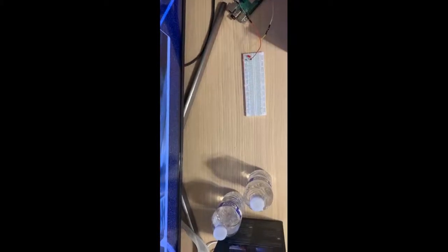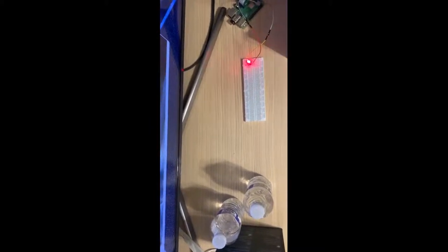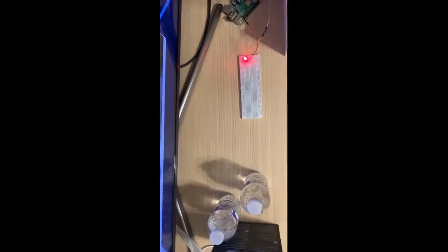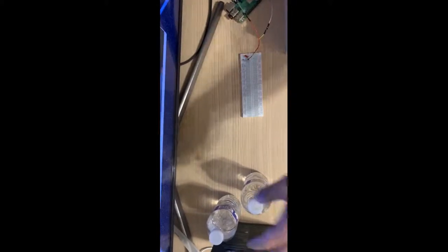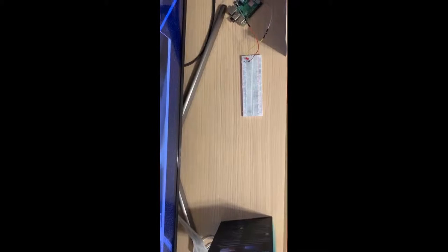When an object is recognized by the Pi Camera, an output signal is transmitted to indicate that the object in question is recyclable. At this stage of development, the Pi Camera has been trained to recognize plastic bottles. When detected, a red LED is turned on signifying the item is to be recycled.